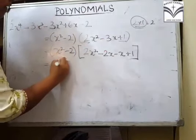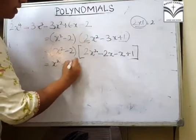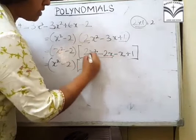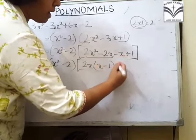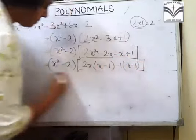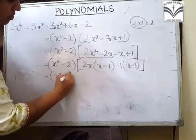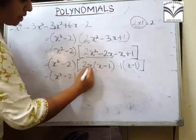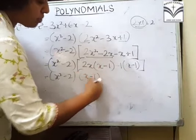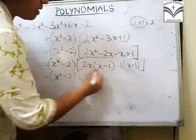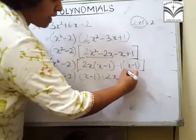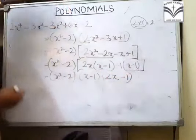Ab common lete hain. x² - 2 ko waise hi rakhenge. In dono mein se common hai 2x, baaki hai x - 1. Yahan par common hai minus 1, baaki x - 1. So x² - 2 into — ab yahan in dono mein common kya hai: x - 1 common hai. x - 1 mein se nikalega: yeh hai 2x. x - 1 mein se nikalega: yeh hai minus 1.